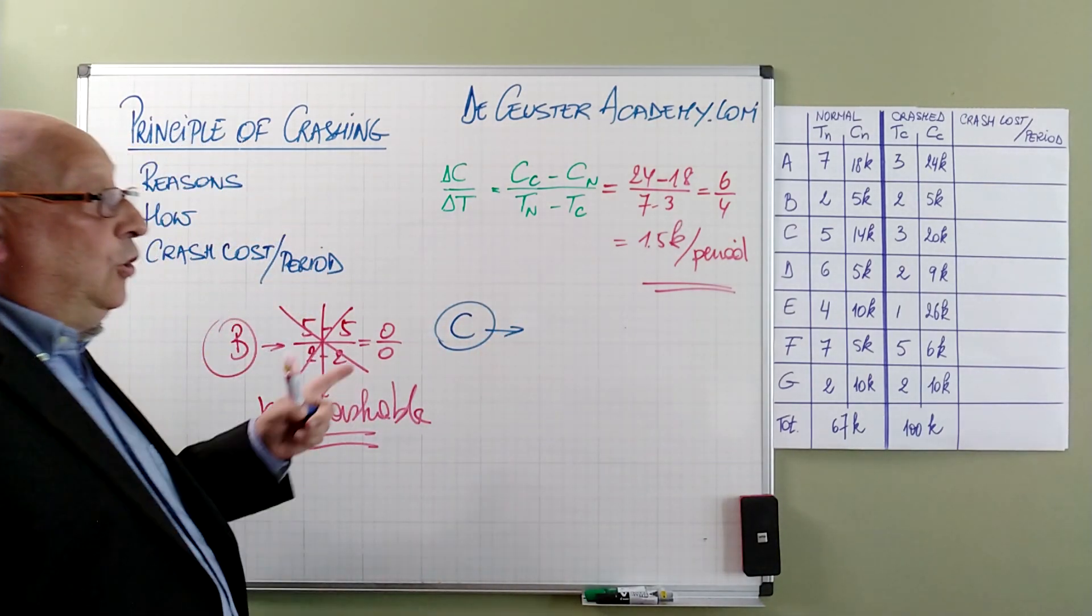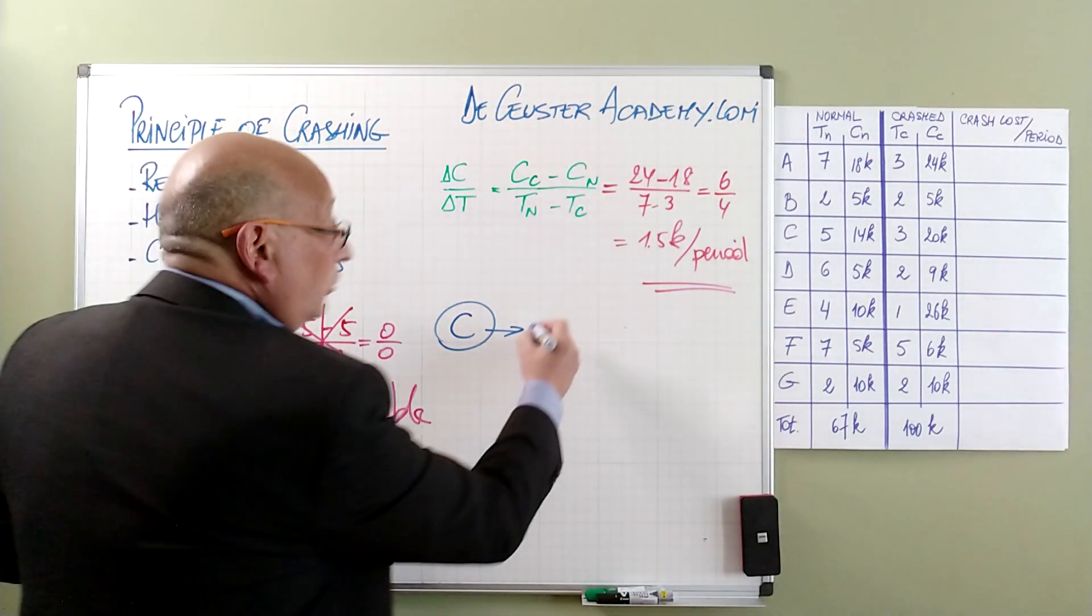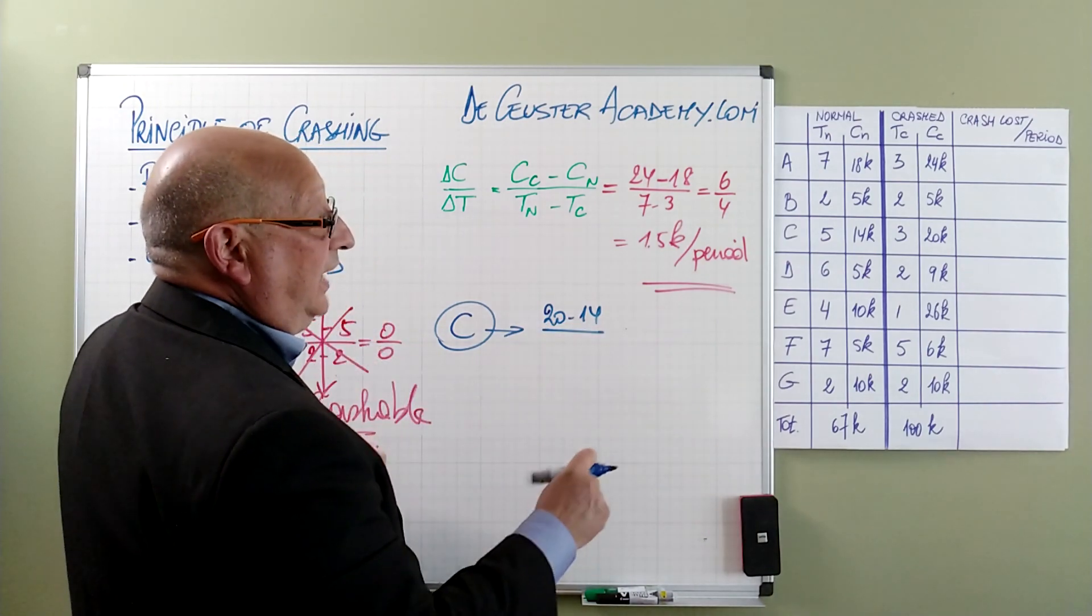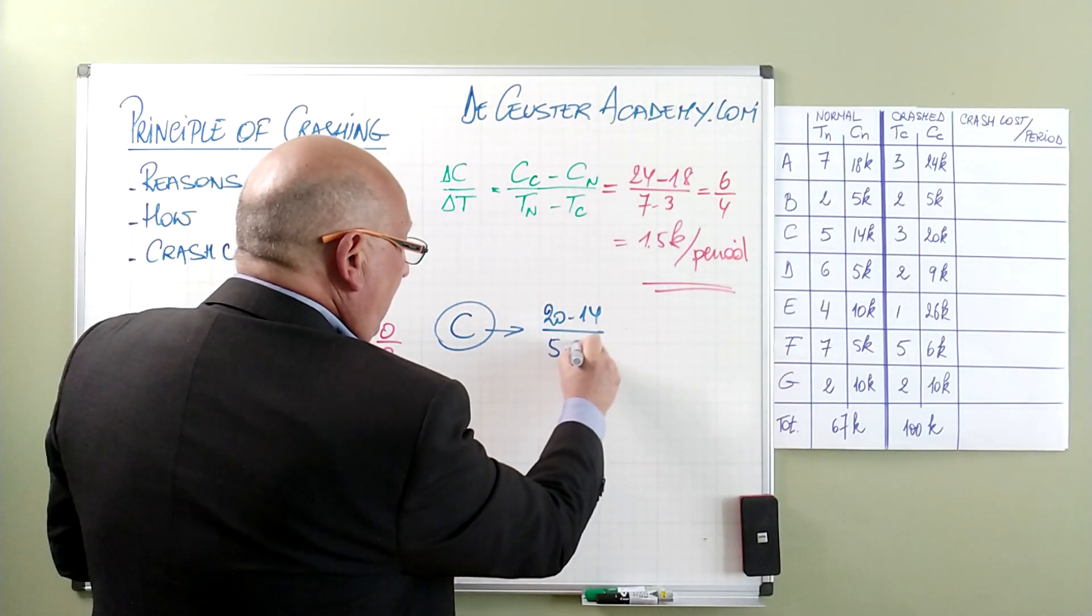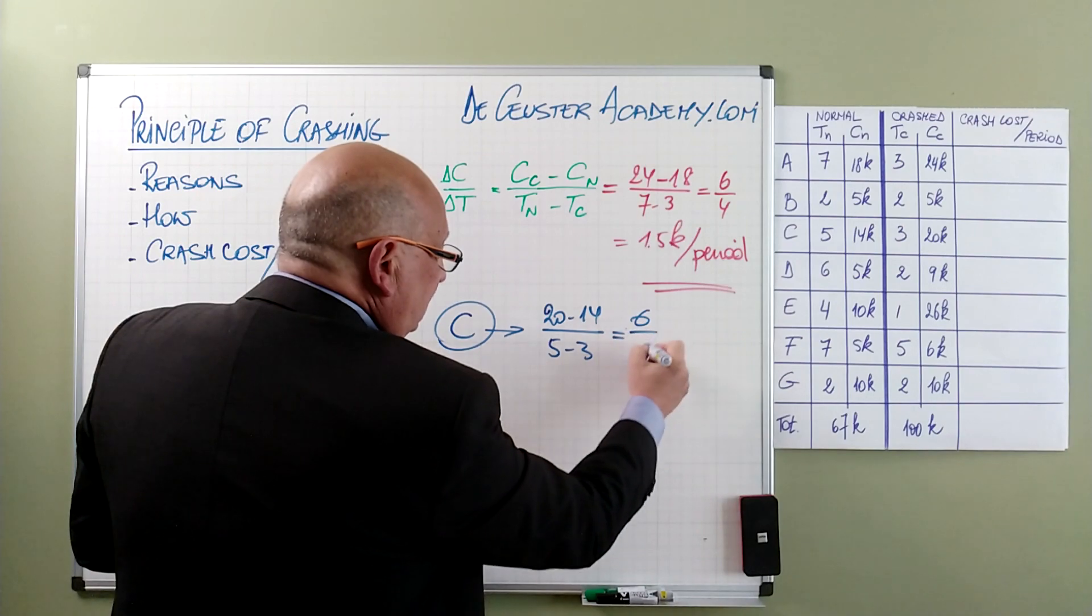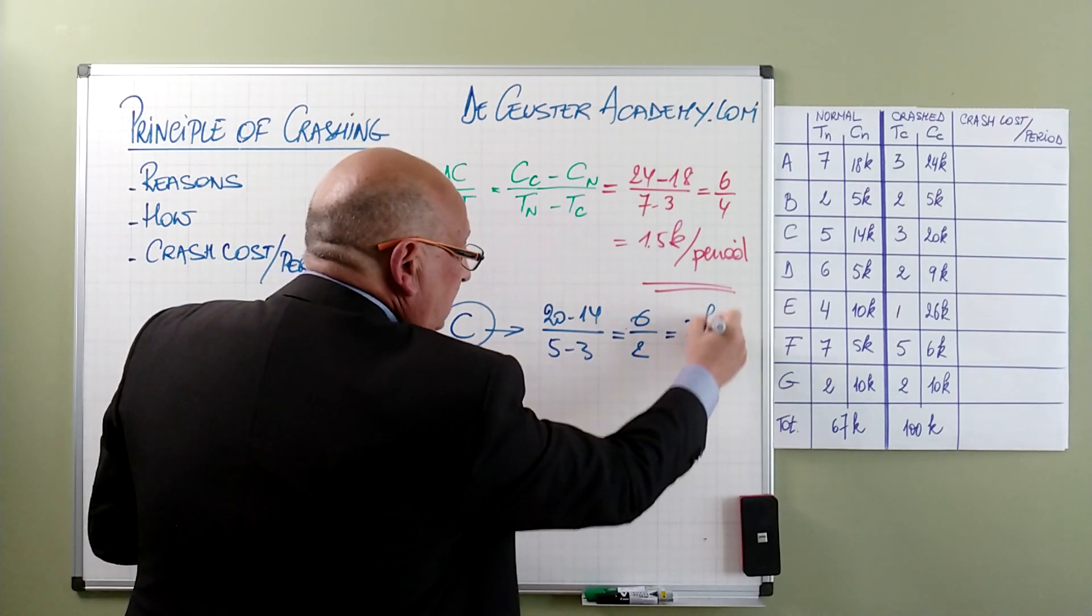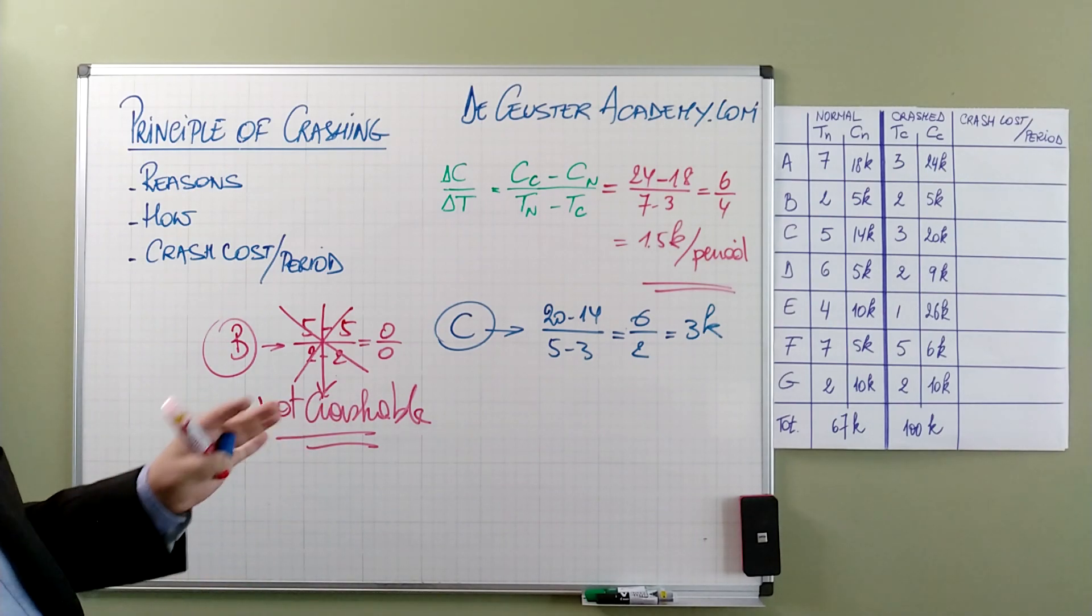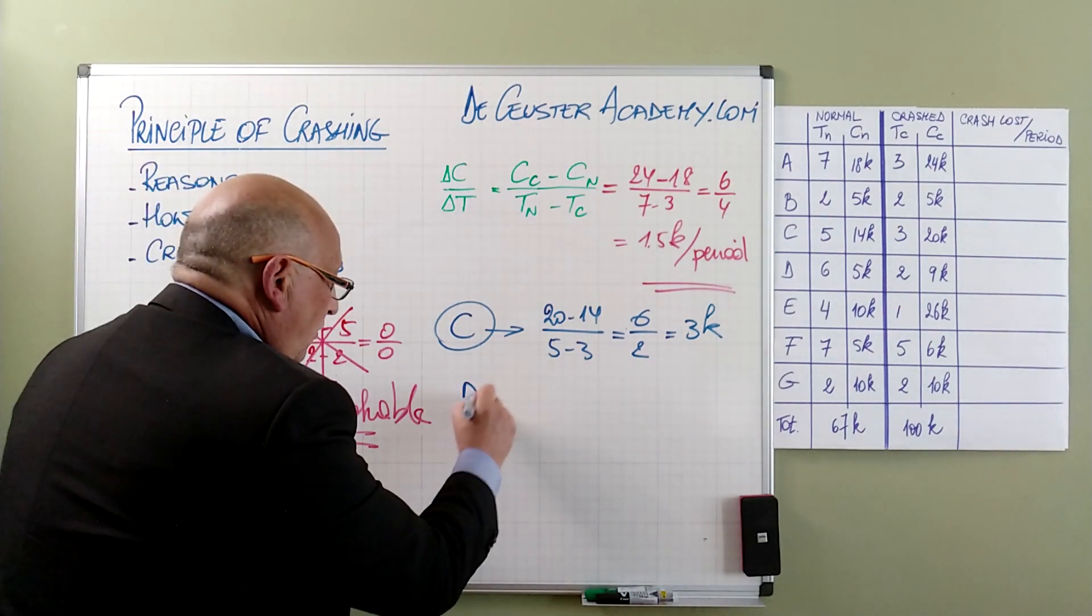For activity C, we find the difference in cost is 20 minus 14 divided by 5 minus 3, which is 6 divided by 2, basically 3K.